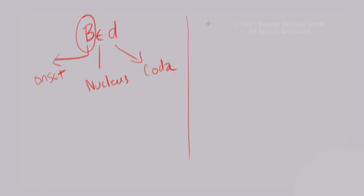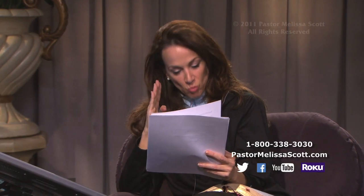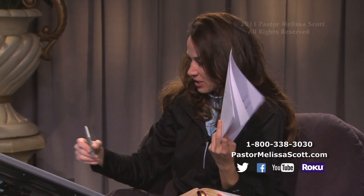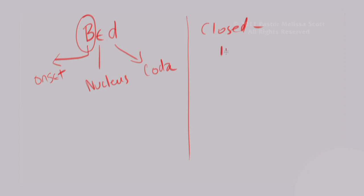In English, the first syllable type is 'closed.' A closed syllable is one that has one vowel and ends with a consonant — such as 'in' or 'on': one vowel, one consonant at the end. That is considered a closed syllable: one vowel ending in a consonant.